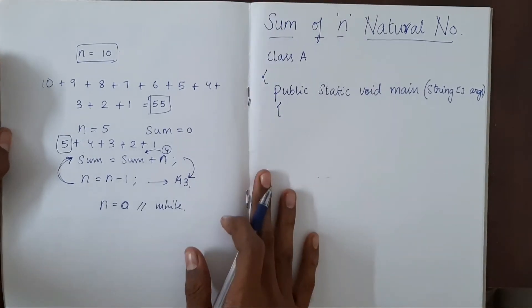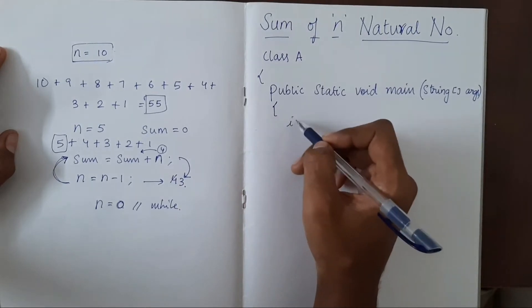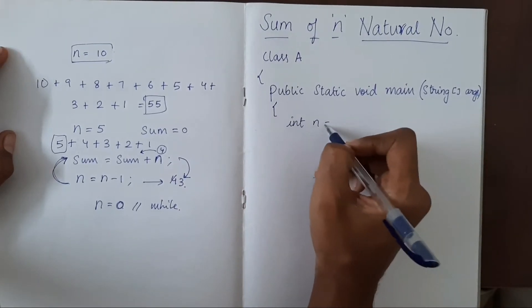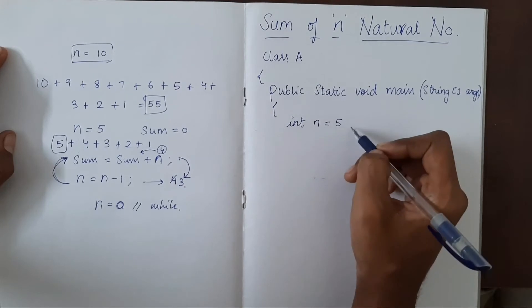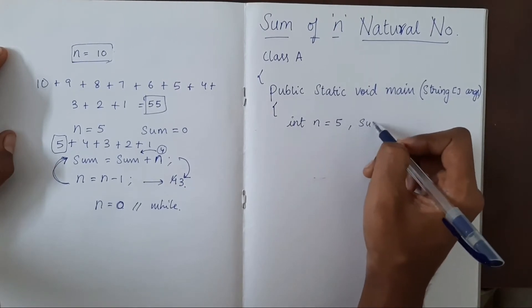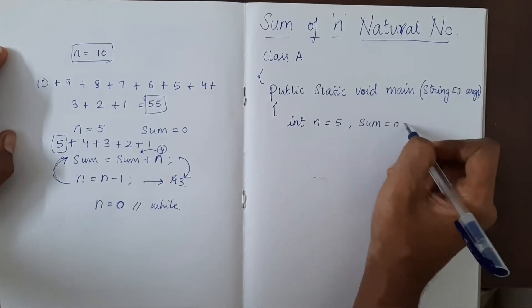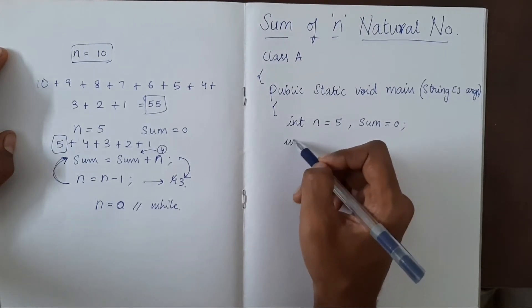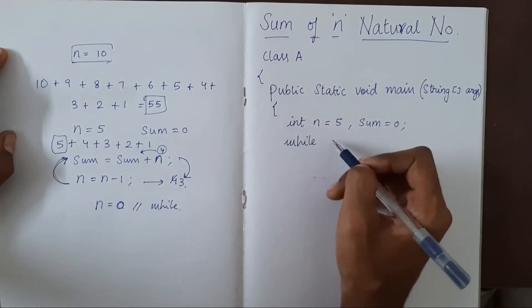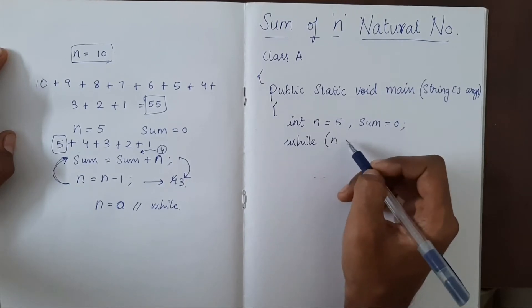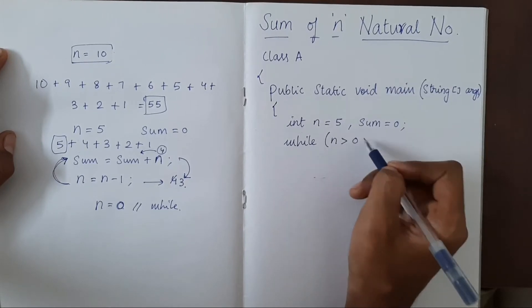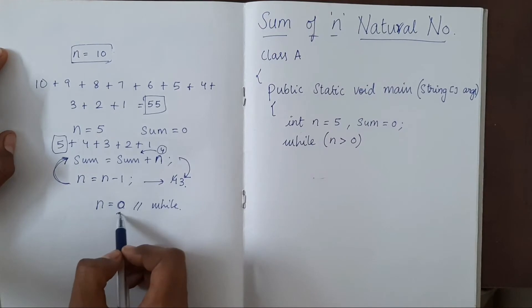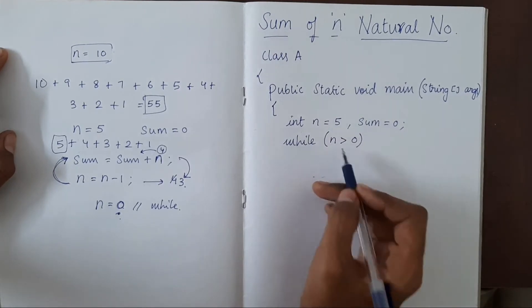So let's write the program. We have an integer n equal to 5, another variable to store the sum. It's initially 0. We will say while n is greater than 0. Because when it is 0, we have to stop. So whenever it is greater than 0,